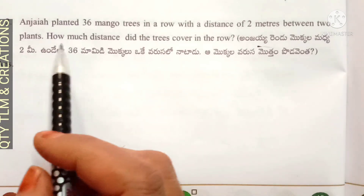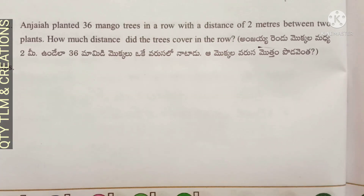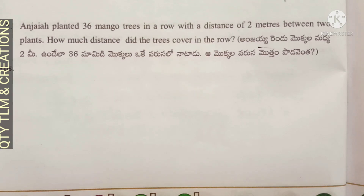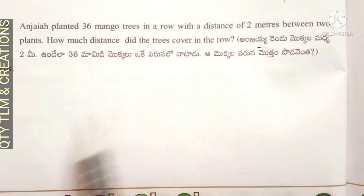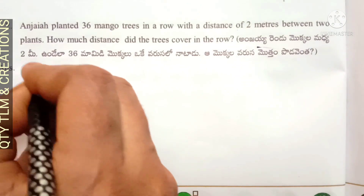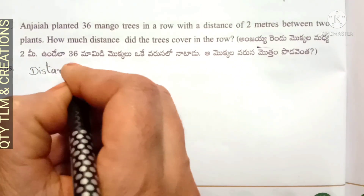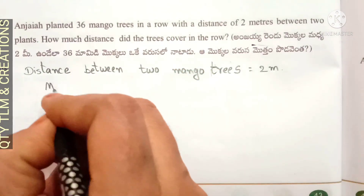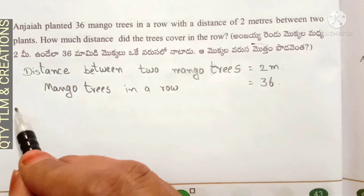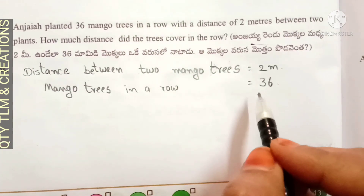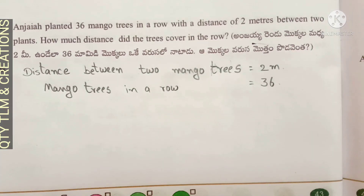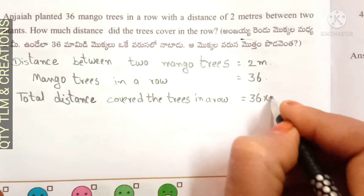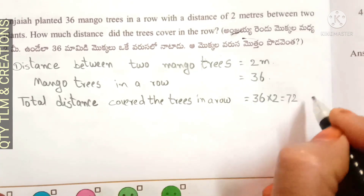Next question: Anjaya planted 36 mango trees in a row with a distance of 2 meters between two plants. How much distance did the trees cover in the row? Distance between two mango plants is equal to 2 meters. Total distance covered in a row is equal to 36 into 2, that is equal to 72 meters — 36 trees into 2 meters equals 72 meters.